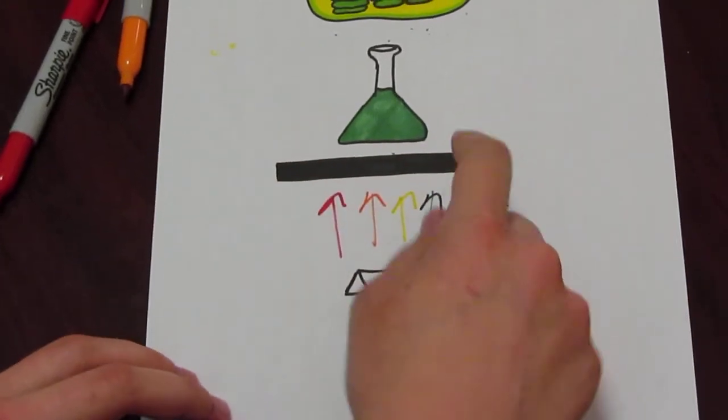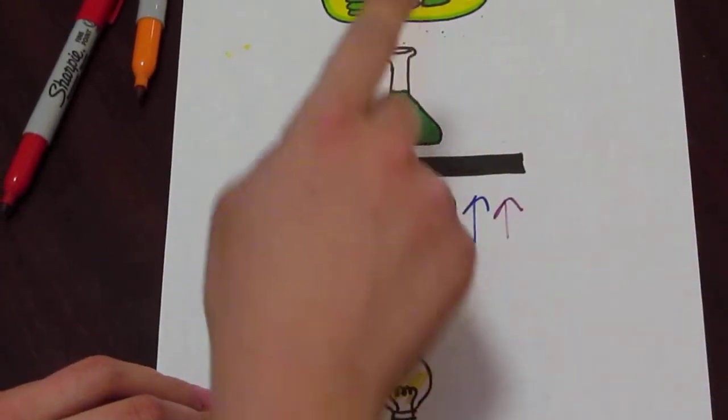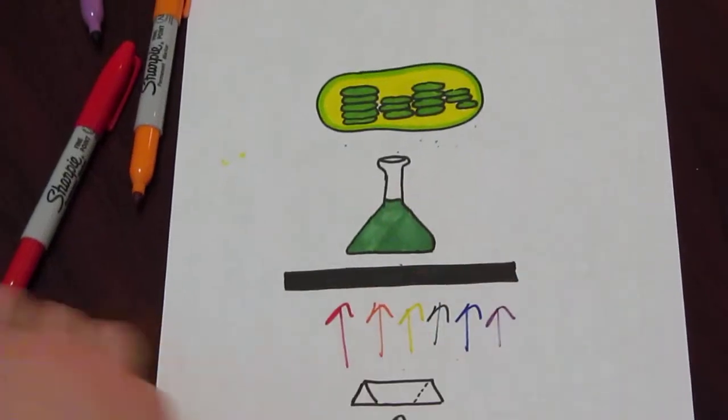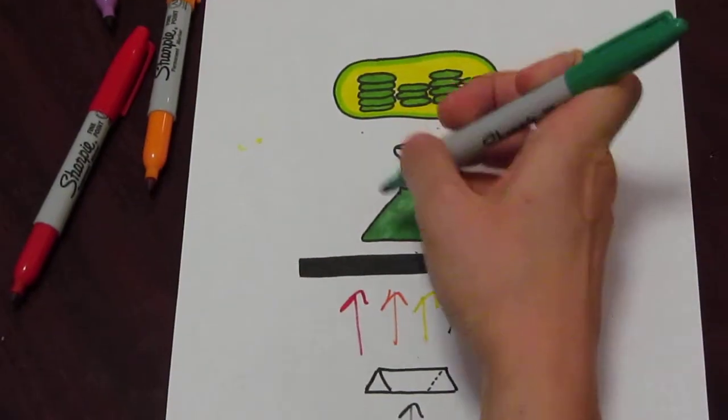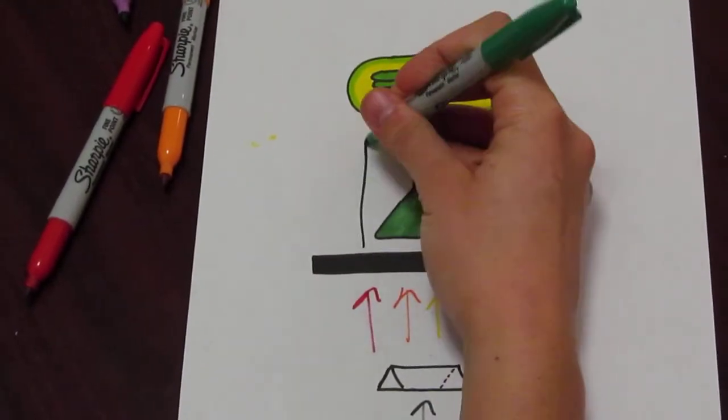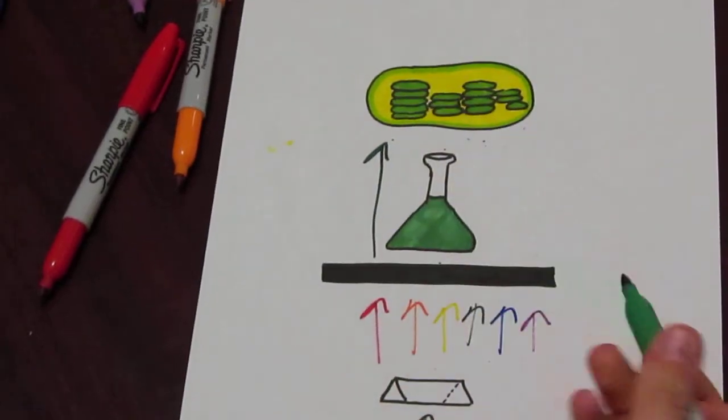The slit selects the color light you want and that leads to this solution full of chloroplasts. So say we're looking at green light. The green light is going to pass through and here's a chloroplast.